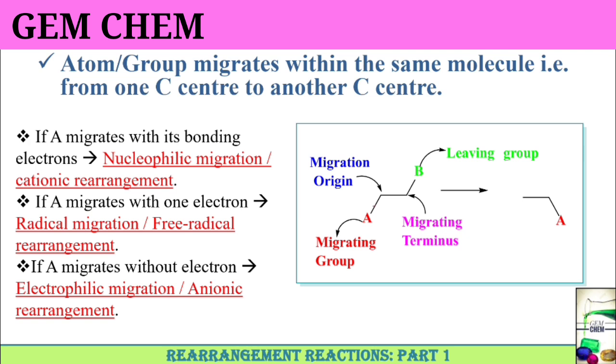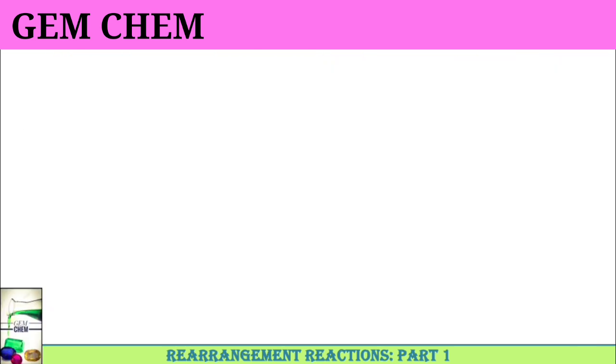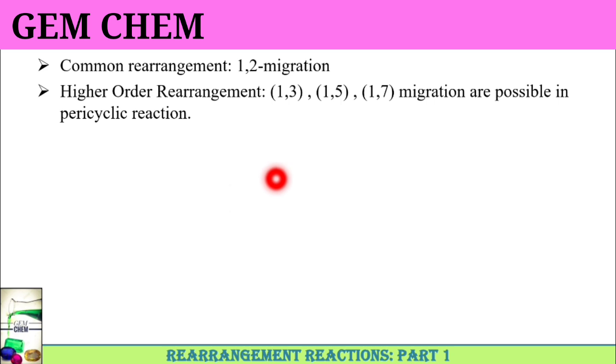By the time we do the series, we will know different types of rearrangement and specifically for each rearrangement, we will learn many name reactions. First we are going to do the general formation of the intermediates. Common rearrangement is 1,2-migration, that is shift of the group of atoms from first position to the next position. Higher order rearrangements are also possible where 1,3, 1,5 and 1,7 migrations can be obtained, basically seen in pericyclic reaction.